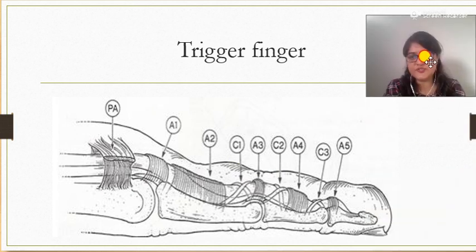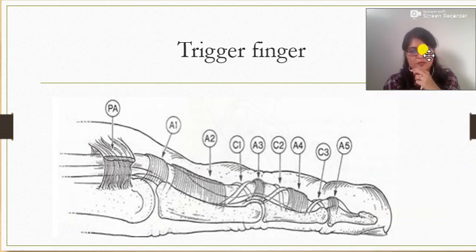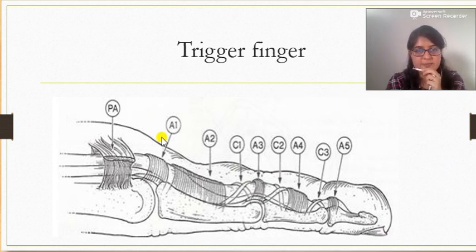As you can see the picture of the digit, there are five annular pulleys and three cruciform pulleys. So the trigger finger happens at the A1 pulley. Here it happens.